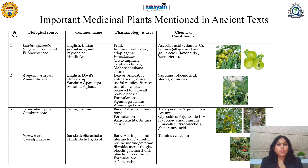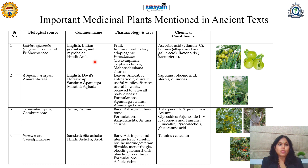We will learn the important medicinal plants mentioned in ancient text. The first one is Emblica officinalis or Phyllanthus emblica, belonging to family Euphorbiaceae. In English, it is called as Indian Gooseberry or Emblic Myrobalan, and in Hindi and Marathi, it is called as Amla or Avla.